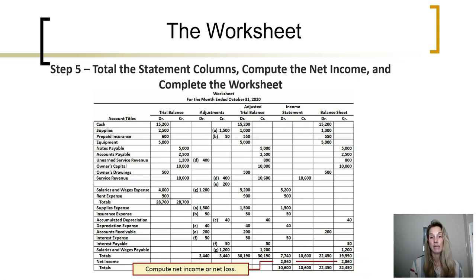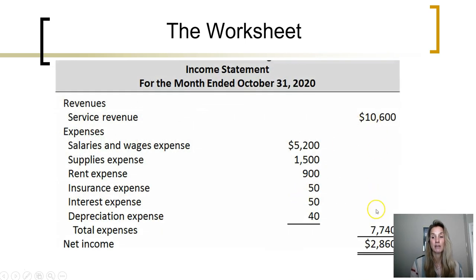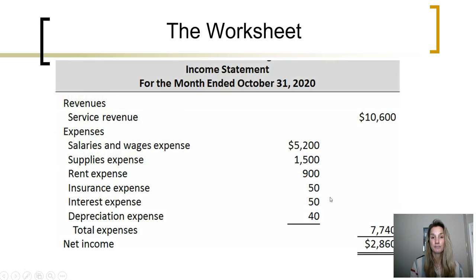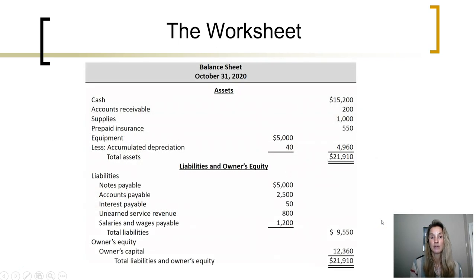Now with this worksheet complete, it makes it very easy for us to prepare financial statements. Using the information out of the income statement columns, we are able to easily prepare the income statement. Going back to those worksheet columns, we then take the amounts out of the balance sheet column to prepare our owner's equity statement — beginning owner's capital, plus owner investments, plus net income, minus any owner drawings, to get to the ending owner's capital. Then we are able to use the final column to prepare our balance sheet. So the process is really the same; the worksheet just gives us a visual aid for preparing the financial statements and posting the adjusting entries.